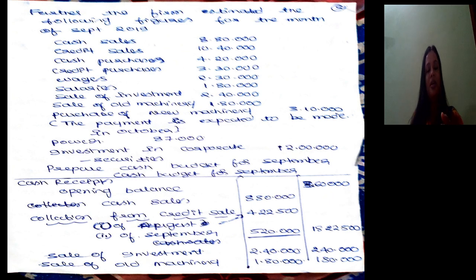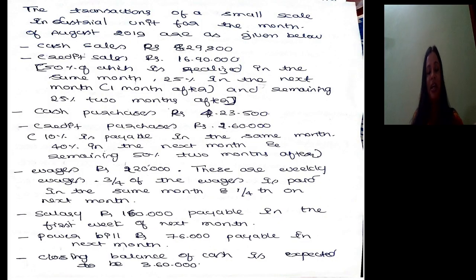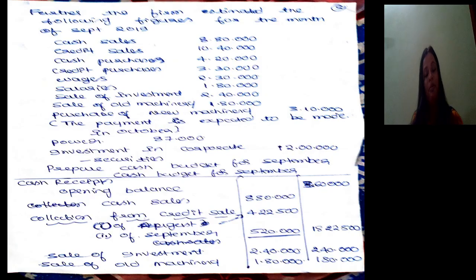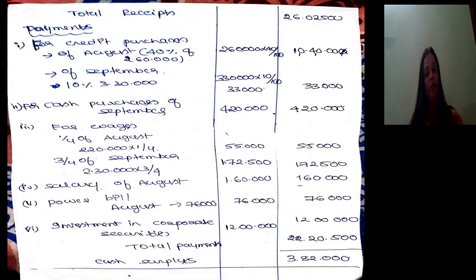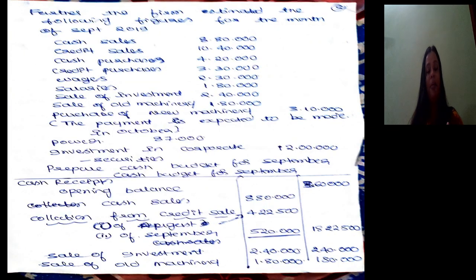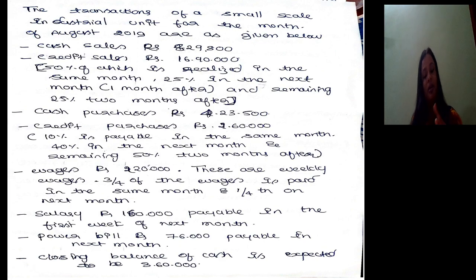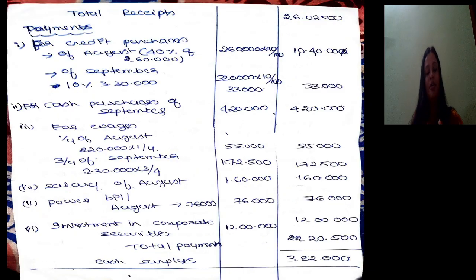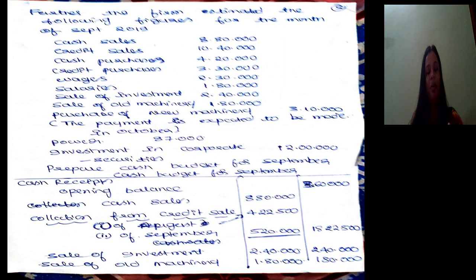For salary: referring to August, salary is payable in the first week of the next month. So August salary Rs 1,60,000 is paid in September. September salary of Rs 1,80,000 will be payable in October. For power bill: August's rule states it is payable in the next month. So August power bill Rs 76,000 is paid in September. There is no separate September power bill entry in receipts.